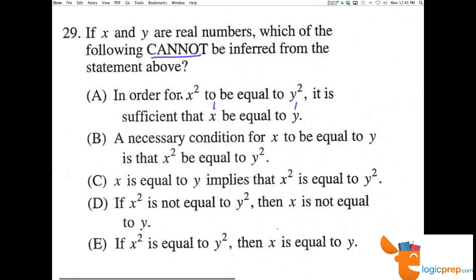Same thing holds true. If x squared is equal to y squared, it is sufficient that x be equal to y. If we chose any other value like zero, that's also a real number.